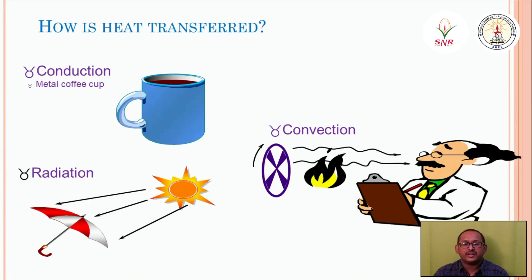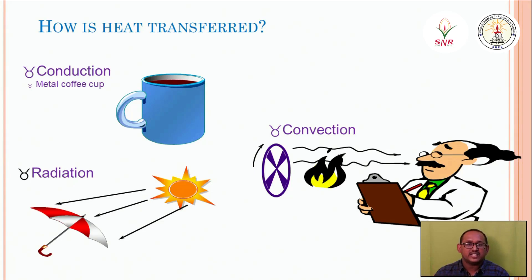In conduction, for example, a metal coffee mug absorbs heat easily — the heat is conducted from the coffee to the mug because metal conducts heat well. For radiation, the sun is a good example: heat is radiated from the sun to the Earth's surface. For convection, air conditioning is an example — the blower applies force to spread coldness over an area.